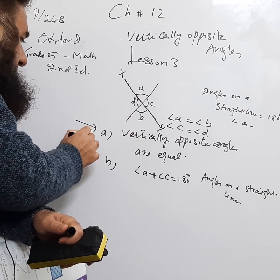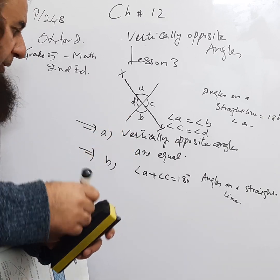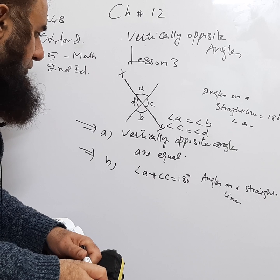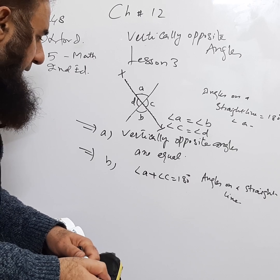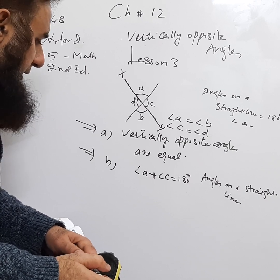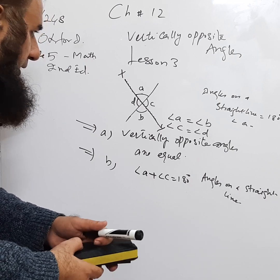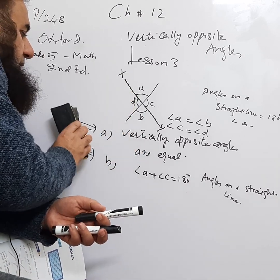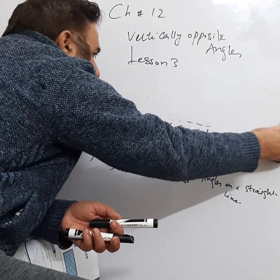The sum of angles on a straight line is always equal to 180°. These are the two main points you need to remember to apply in lesson three, and you can solve all the questions using these two points. These are very important points.